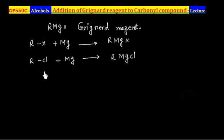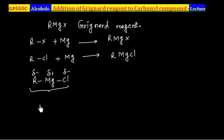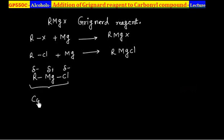If I see the structure of RMgCl, magnesium is highly electropositive, so it will have a delta-plus charge. Chlorine will have a delta-minus charge, and R will also have a delta-minus charge. So this is the covalent structure of Grignard reagent — highly polar.